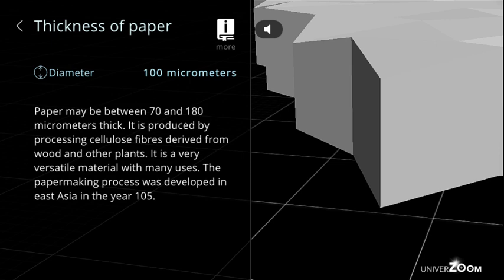Thickness of paper, diameter: 100 micrometers. Paper may be between 70 and 180 micrometers thick. It is produced by processing cellulose fibers derived from wood and other plants. It is a very versatile material with many uses. The papermaking process was developed in East Asia in the year 105.